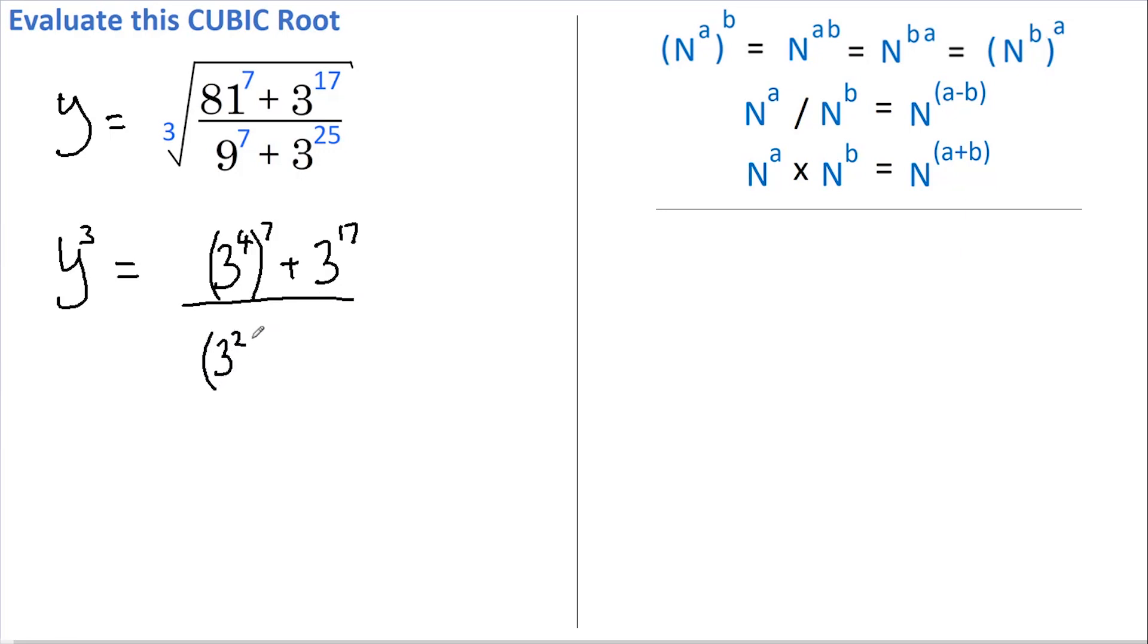And on the bottom we've got 3 squared to the power of 7 plus 3 to the 25. Since rule number 1 allows me to write a power raised to another power as those powers multiplied together, I'm going to rewrite this as 3 to the power of 28 plus 3 to the 17 divided by 3 to the 14 (2 times 7) plus 3 to the 25.